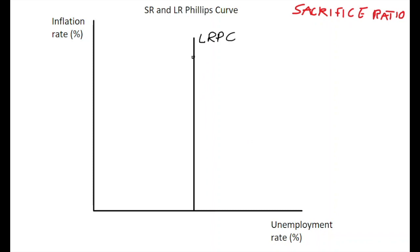We are going to start off here at point A, and at point A we have a certain inflation rate in the economy — let's call that inflation one — which is relatively high, and monetary authorities want to reduce this inflation rate if possible.